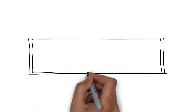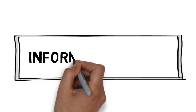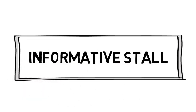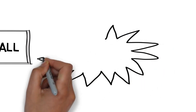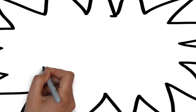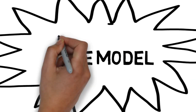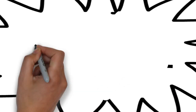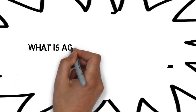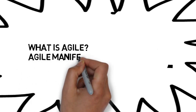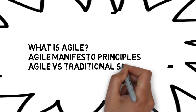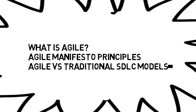Hi, this is Furkan and you are listening to Informative Stall. In this video we are going to discuss a type of SDLC model which is known as the Agile model. This video consists of three parts: the first part discusses what Agile is, the second part covers the Agile Manifesto principles, and the third part discusses the basic difference between Agile and traditional SDLC models.